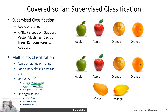Similarly, we can do one-against-one. We can try apple versus oranges as one classifier, apple versus mango as another, and orange versus mango as the third. For a given object, we use these three classifiers and combine their outputs to determine the class. Both of these types of combinations are available within sklearn, so we don't need to worry much about extending a binary classifier into a multi-class classifier.